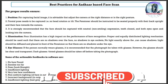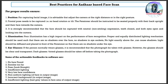For proper results, ensure the following. One — Position: adjust the camera at the right distance and posture for capturing the facial image. Two — Frontal pose: no head rotation or tilt. The pensioner should be seated properly with their back upright and face towards the camera. It is strongly recommended to capture the face with a neutral, non-smiling expression, teeth closed, and both eyes open and looking into the camera. Four — Illumination: poor illumination has a high impact on face recognition performance. Use proper and equally distributed lighting so there are no shadows over the face, no shadows in eye sockets, and no light directly above which can cause shadows. Light should be diffused and placed in front of the pensioner.